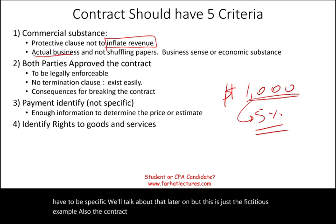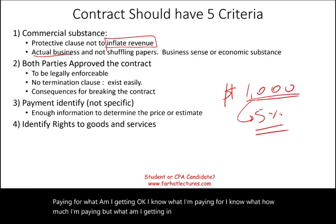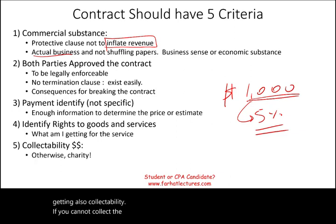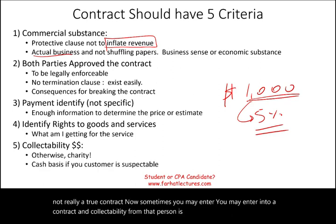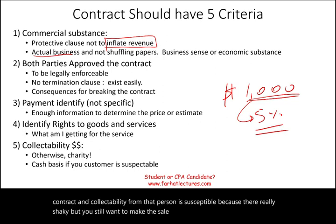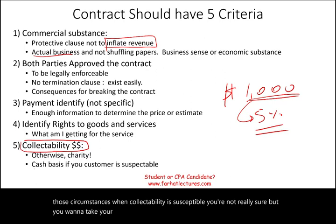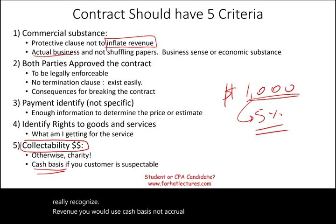Fourth, the contract must identify the rights to goods and services — exactly what you are getting in exchange for your payment. Fifth is collectability. If you cannot collect the money, you're essentially a charity, not a business. Sometimes collectability is uncertain — you're not sure the customer will pay, but you still want to make the sale. Under those circumstances, you would use cash basis accounting: you wait until you actually get paid to recognize the revenue, rather than accrual basis.